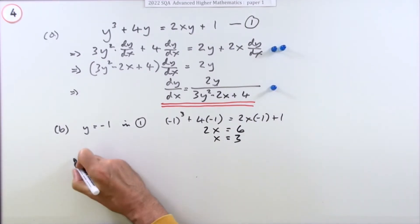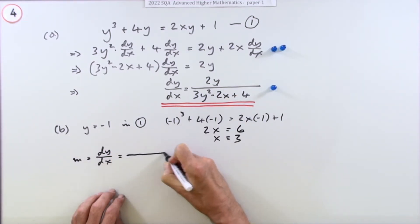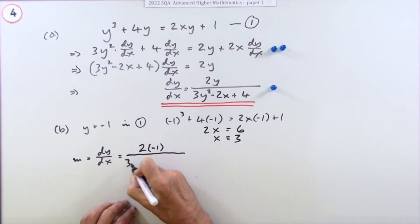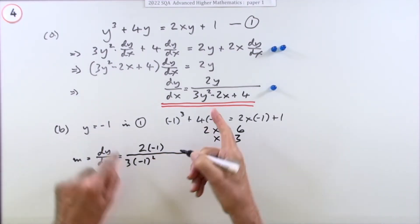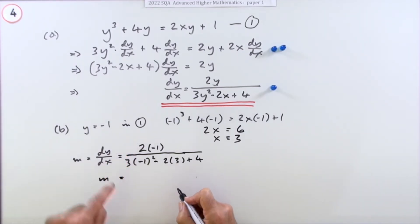Now I can pop it in. I've got the two coordinates so the gradient will be dy/dx. Make sure you put the correct numbers in the correct place: 2y over 3y² - 2x + 4. What does that come to? I've got -2 over 3 and 4 is 7, take away 6 is 1, so m equals -2. Even though there were two steps, there's only one mark for the final answer.